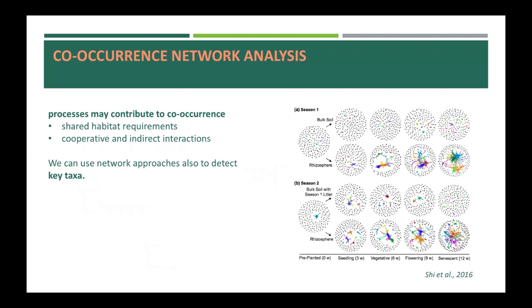For studying the patterns of host-associated communities, co-occurrence network analysis offers a very valuable method. It is a topological approach. Several processes may contribute to co-occurrence, including shared habitat requirements and cooperative and indirect interactions. For example, the figure shows an analysis of a wild-plant rhizosphere community. It has a much more connected and complex network structure than the surrounding bulk soil communities, with predominantly positive co-occurrence patterns. We can use these network approaches also to detect key taxa whose impact on the community is indirectly manifested through their role in the network.